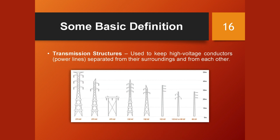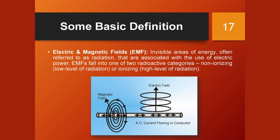Transmission structures are used to keep high-voltage conductors and power lines separated from their surroundings and from each other. Electromagnetic fields (EMF) are visible areas of energy, often referred to as radiation, that are associated with the use of electric power. EMFs fall into one of two categories: non-ionizing, which is a low level of radiation, or ionizing, which is a high level of radiation.